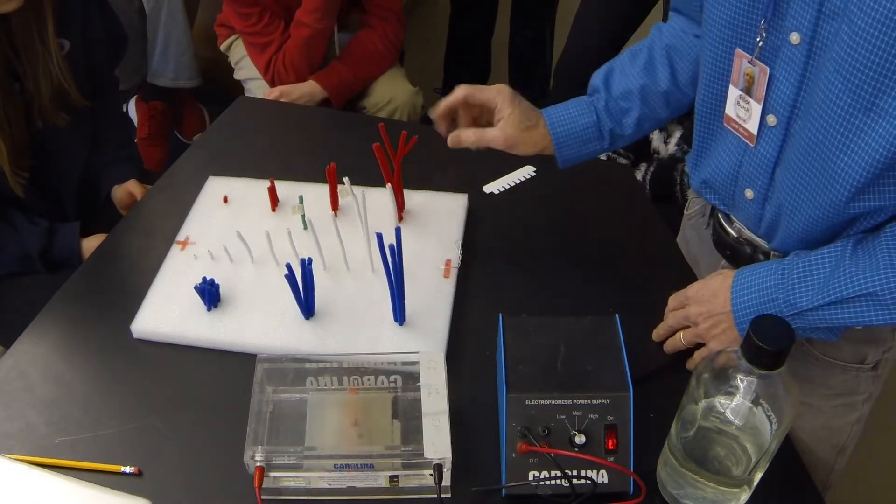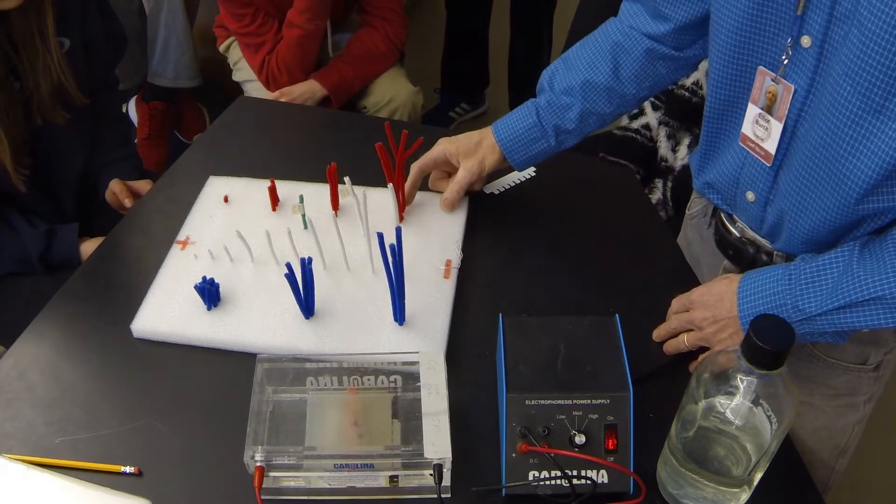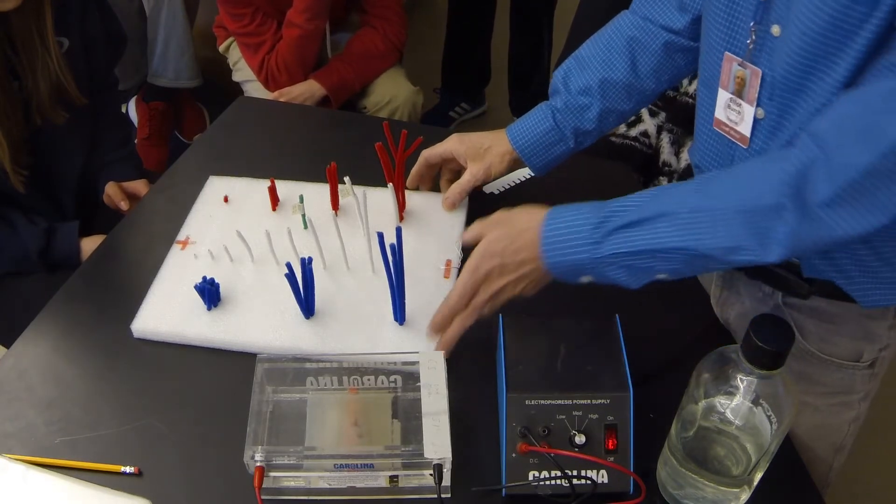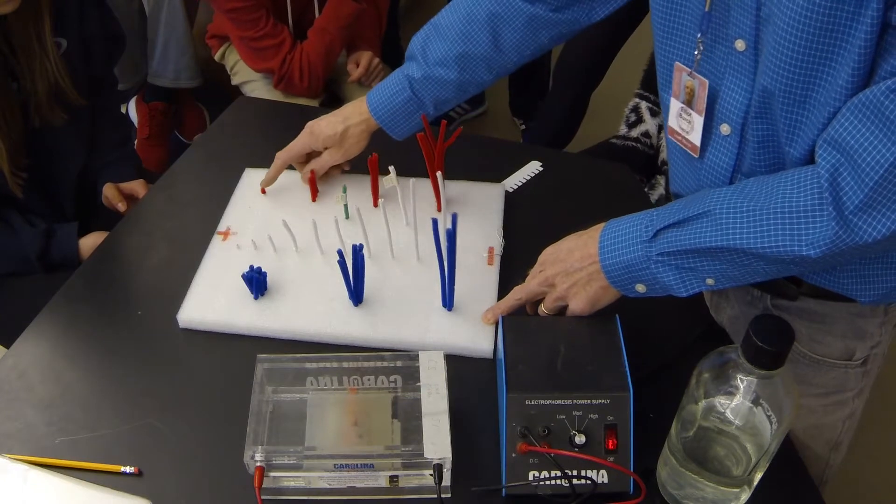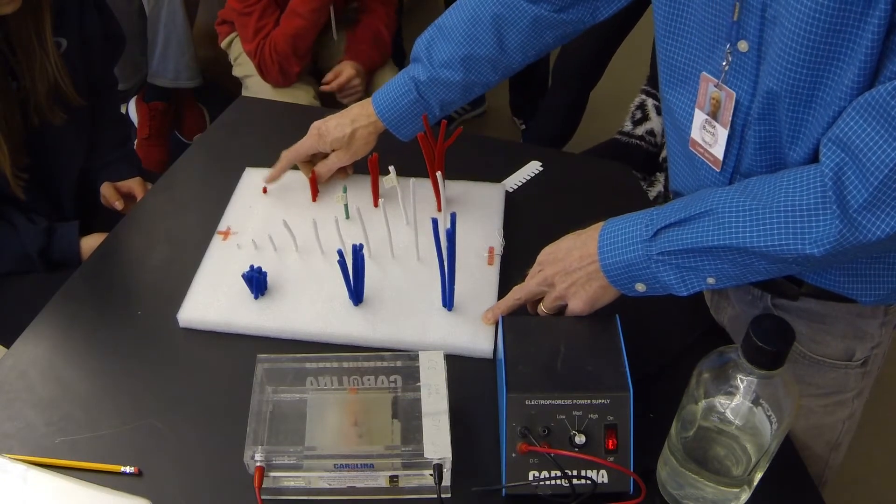This is Emma's DNA. The tallest ones only moved a little bit because they're kind of slow. The medium size a little further, the shorter further, and the littlest one went the furthest because they're really fast.